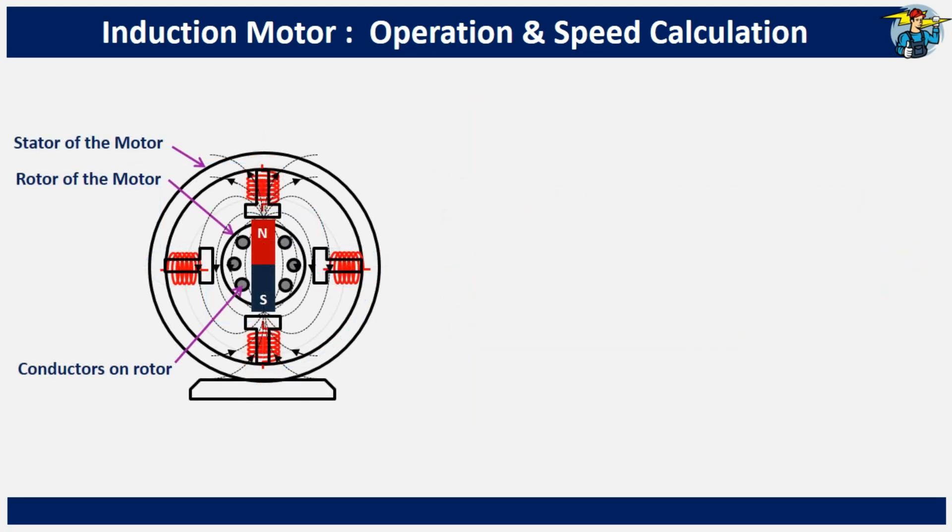When you double the number of pole pairs, the speed of the rotating magnetic field, or synchronous speed, is halved.